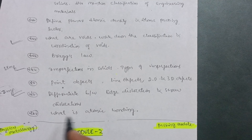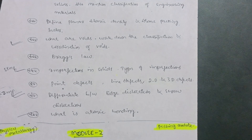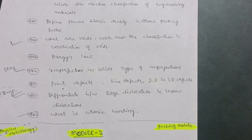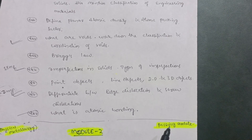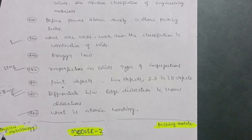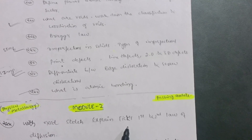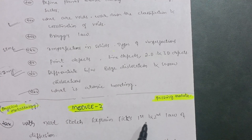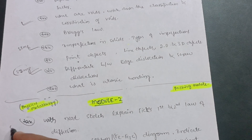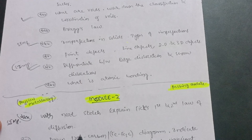What is atomic bonding? This is another question. These are the eight questions you have to cover in Module 1, which is a passing module. Next is Module 2, which is also a passing module: Physical Metallurgy. In this module, you have to cover — with a neat sketch — Fick's first and second law of diffusion, which is the most important, super important question.